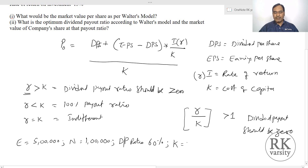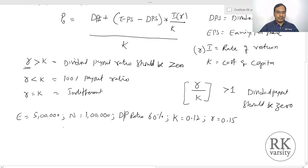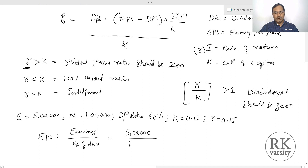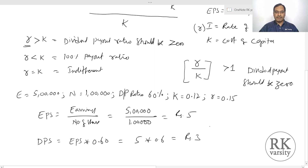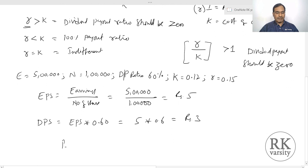So k = 12% and r = 15%. Earnings per share = Earnings / Number of shares = ₹5 lakhs / 1 lakh = ₹5 per share. Dividend per share = dividend payout ratio × EPS = 0.60 × ₹5 = ₹3.